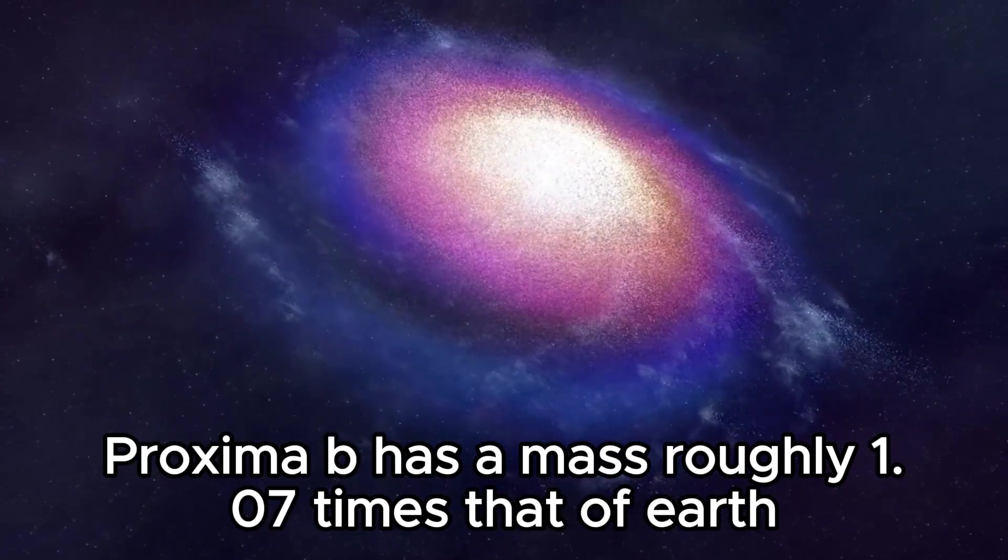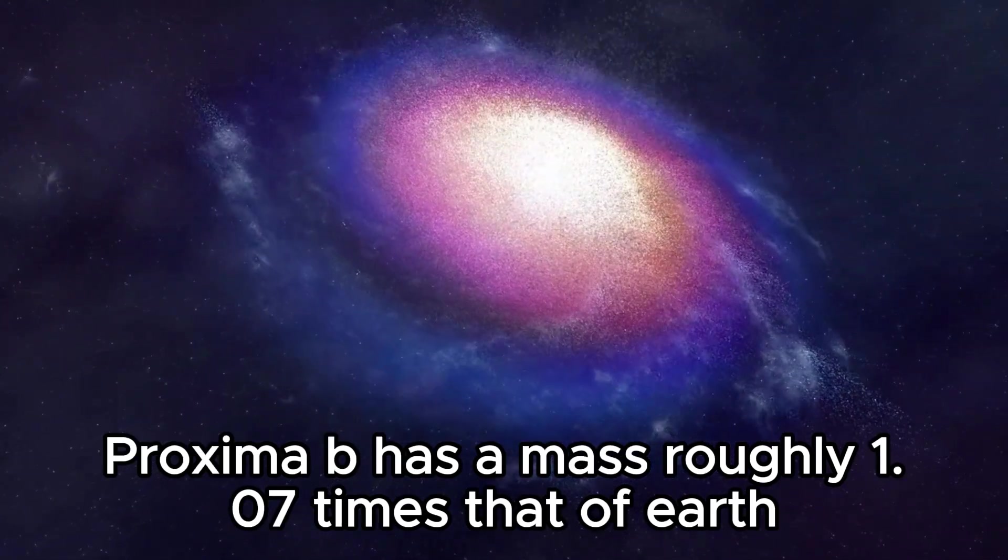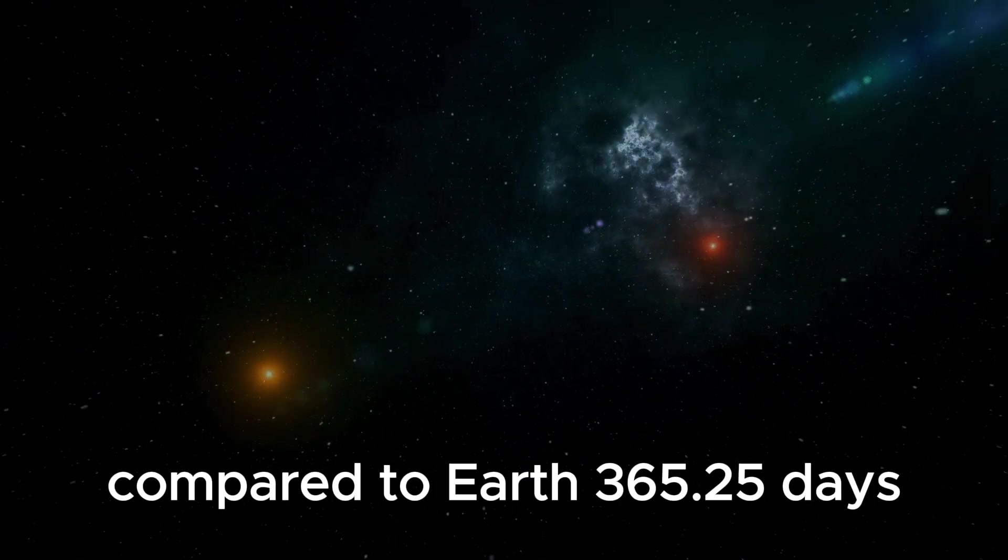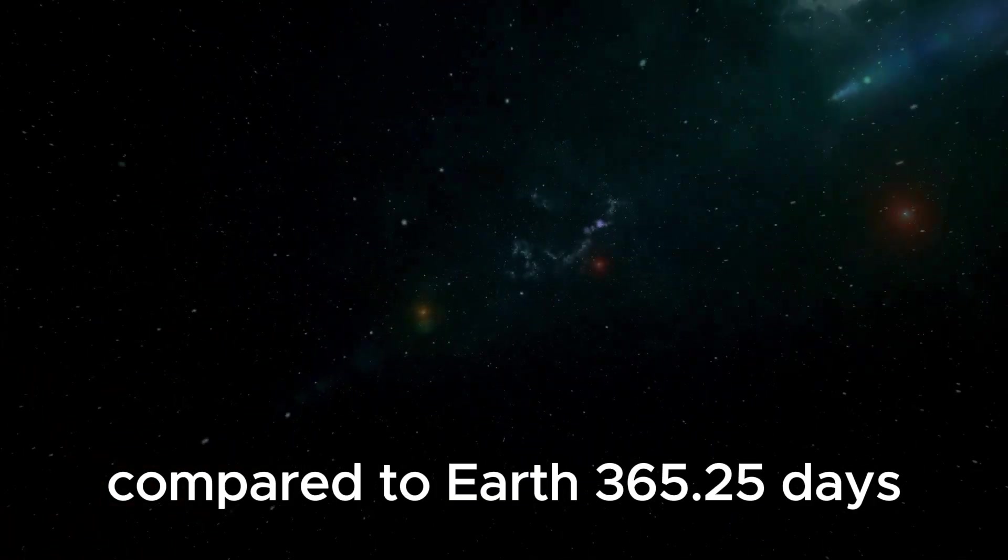Proxima b has a mass roughly 1.07 times that of Earth and completes an orbit around its star in 11.2 days, compared to Earth's 365.25 days.